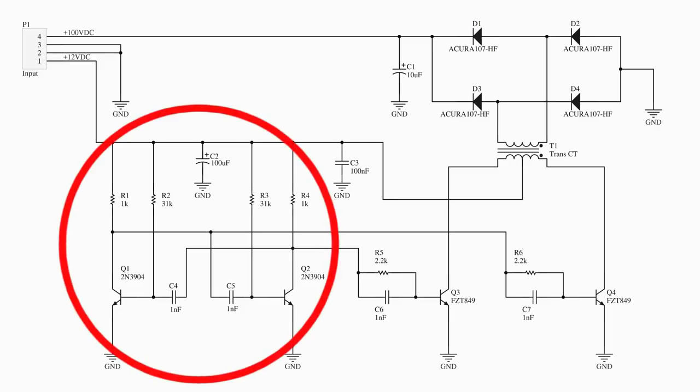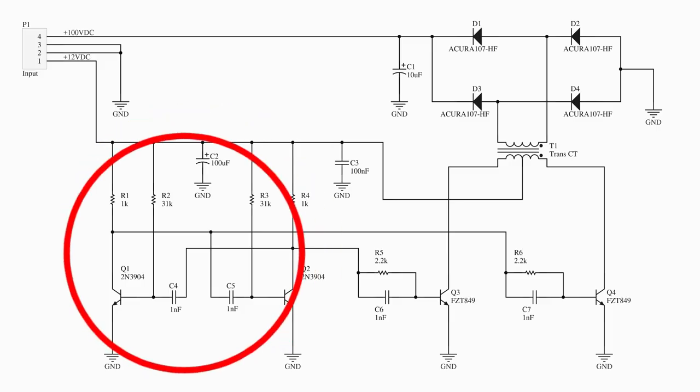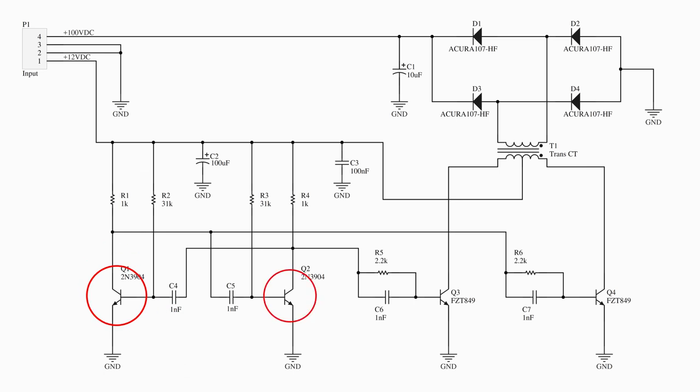An astable multivibrator operating at 20 kilohertz made up of Q1 and Q2 produces a complementary square wave which drives the two transistors Q3 and Q4 which drive the transformer primary. The transformer which is hand wound on a pot core boosts this 20 kilohertz AC signal up to about 100 volts. A bridge rectifier and filter capacitor provides a raw 100 volt DC output. It's very poorly regulated but that's okay because we don't need it to be a very precise 100 volts.